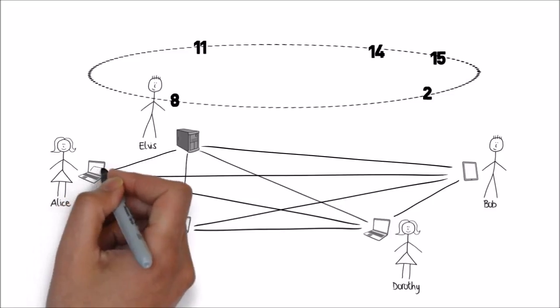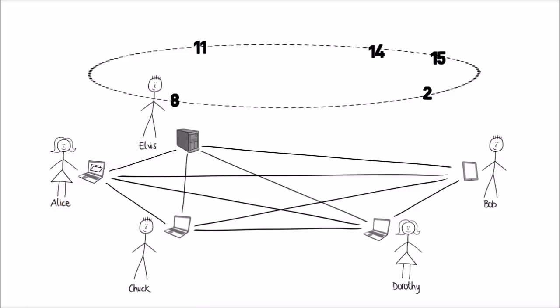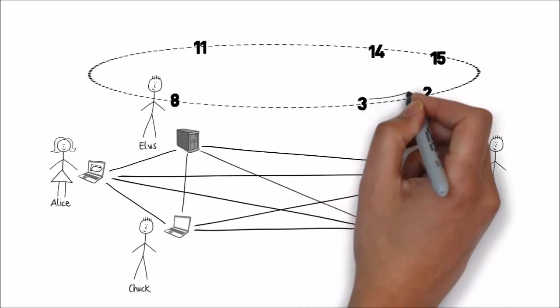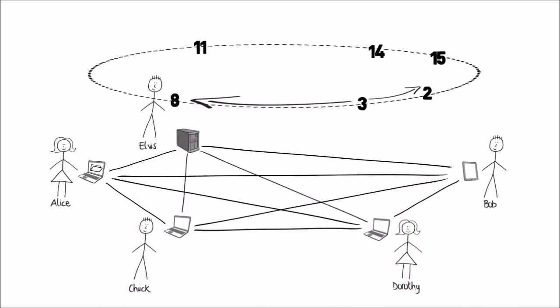Let's come back to Alice's sharing problem. Alice wants to store her file in a distributed hash table so that Bob can load her file later. For this, the file gets assigned a unique key as well. A key of a file can also be arranged together with the IDs along the keyspace. We can see that the key of Alice's file is closest to Elvis's and Dorothy's device IDs. This means that Alice can store her file on Dorothy's as well as on Elvis's device. Now, if Bob knows the key of Alice's file, Bob can easily find out from where he can download it, even when Alice is not online.